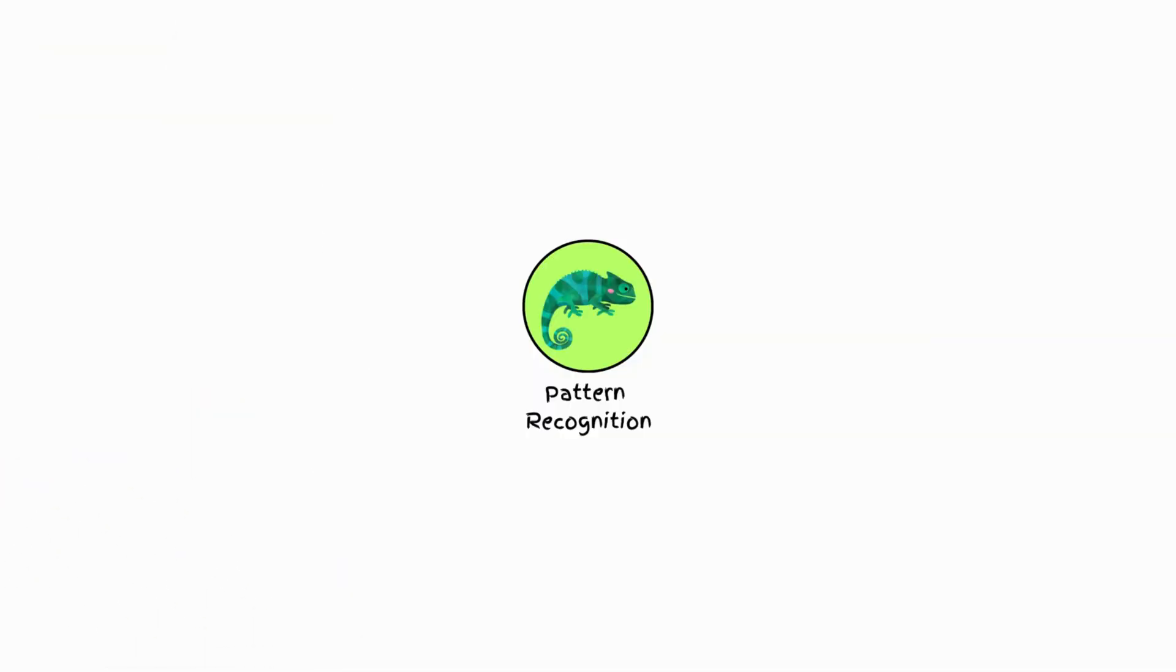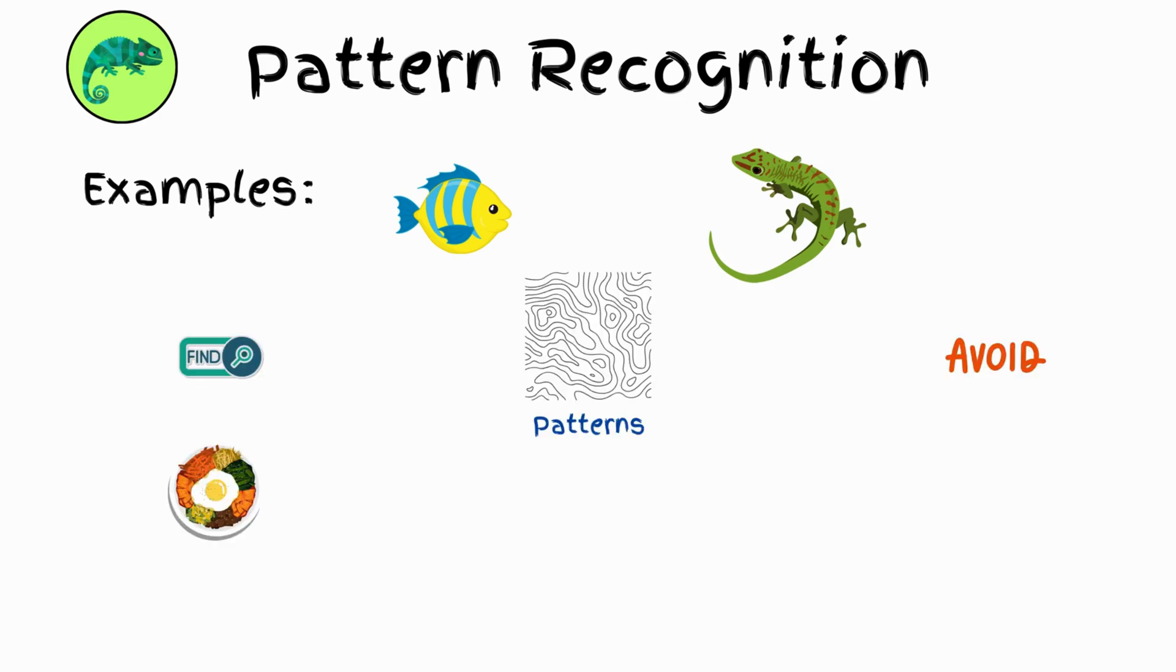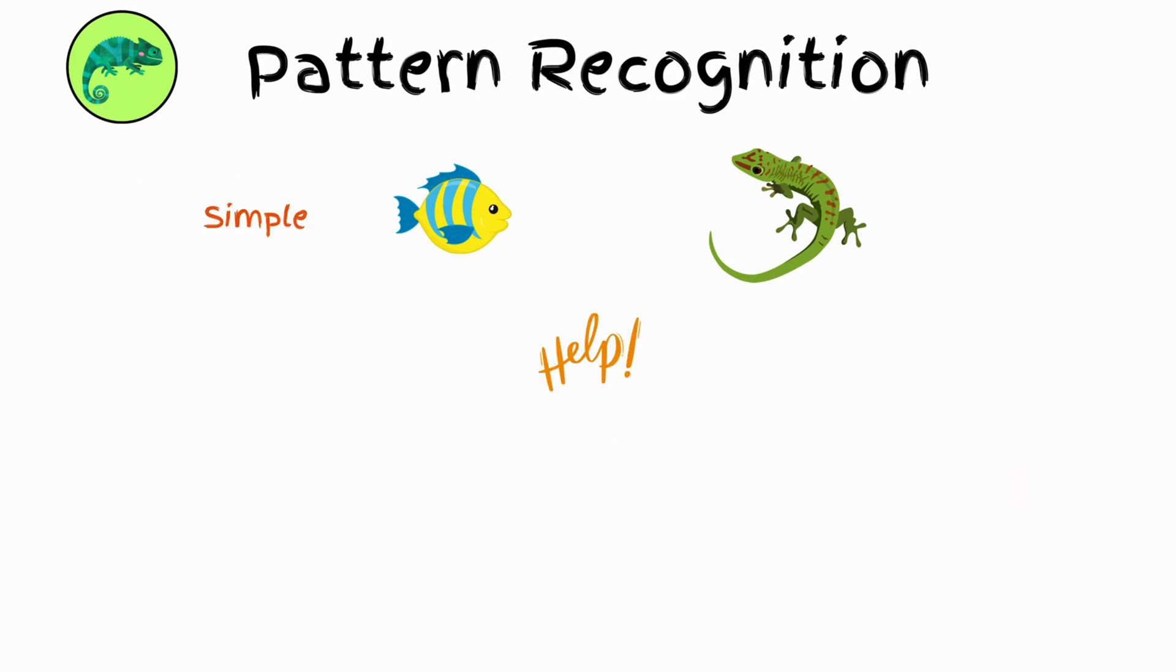Pattern recognition. Examples: fish, reptiles. These animals recognize patterns, like where to find food or how to avoid predators. It's simple, but it helps them survive.